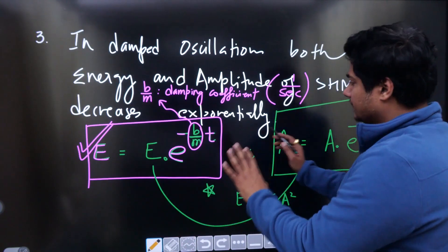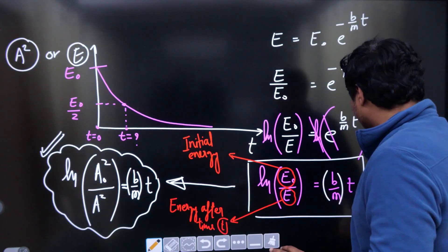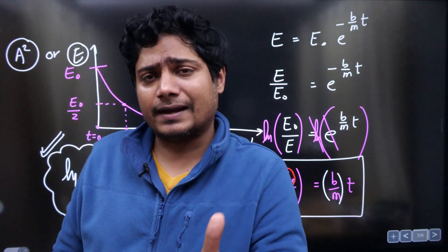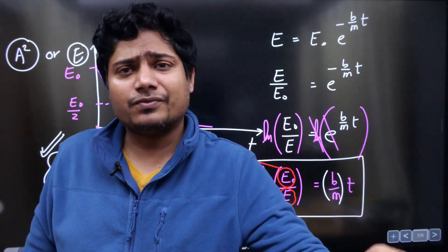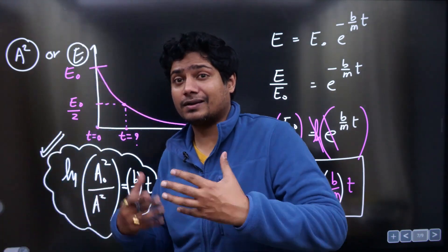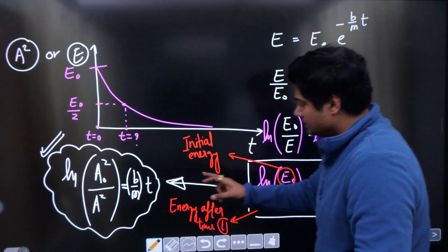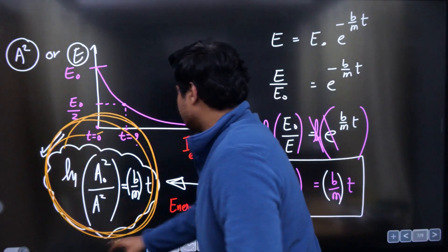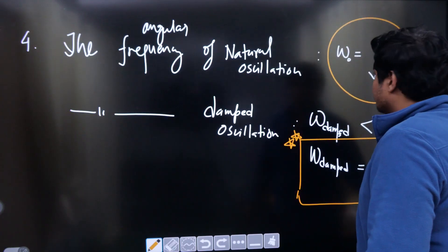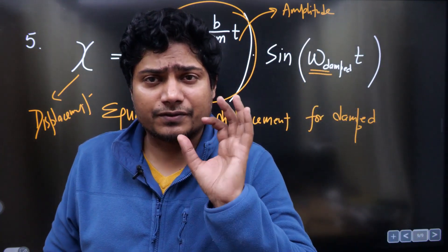I suggest you remember the variation of energy as exponentially decreasing. Questions might come asking: if it takes 10 seconds to reduce amplitude from A to A/2, how much time will it take to reduce from A/2 to A/4? These are like radioactivity-type questions and this formula will be directly helpful. Just from the amplitudes, you can find the time. This is the basic theory of damped oscillation of the simple pendulum.